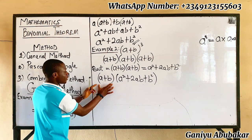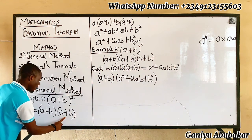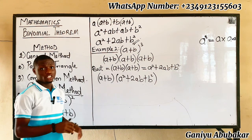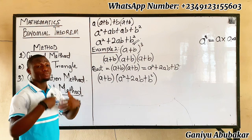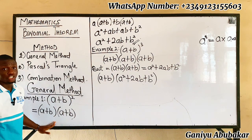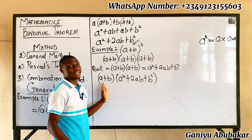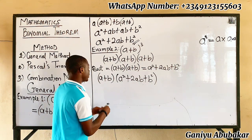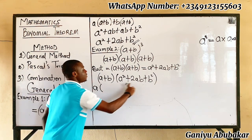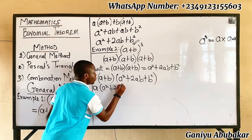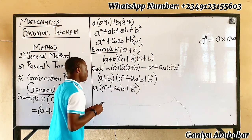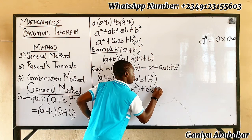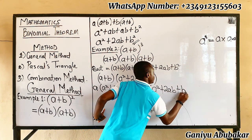Using the same procedure: pick out the first term, a, and multiply by everything in the bracket (a² + 2ab + b²). Then pick out the second term, +b, and multiply by the same bracket. So we have: a(a² + 2ab + b²) + b(a² + 2ab + b²).